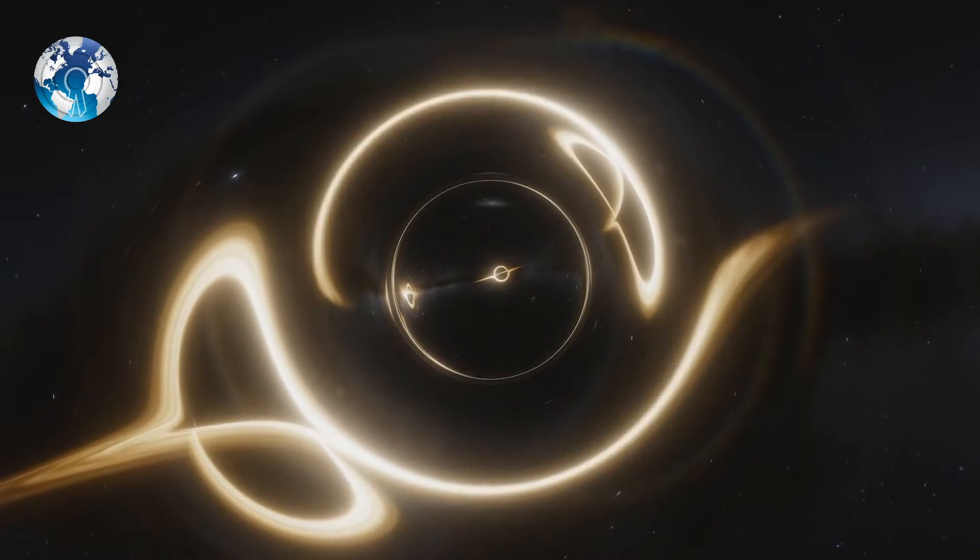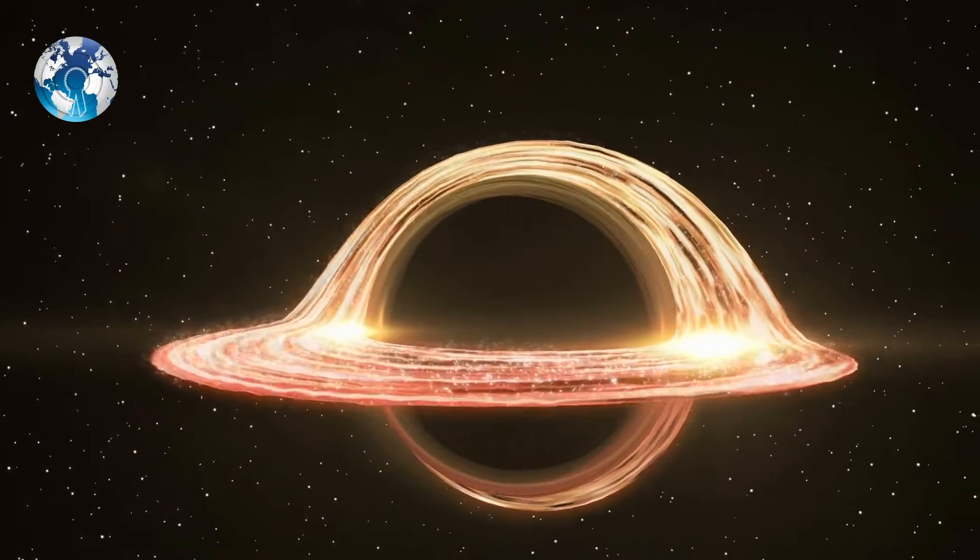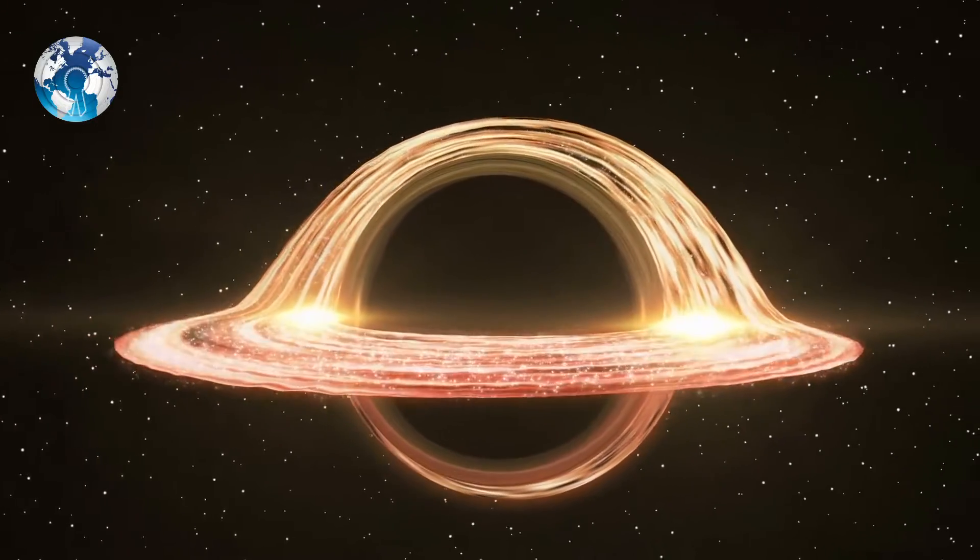However, while light cannot escape a black hole, its extreme gravity warps space around it, which allows the light to echo, bending around the back of the object.